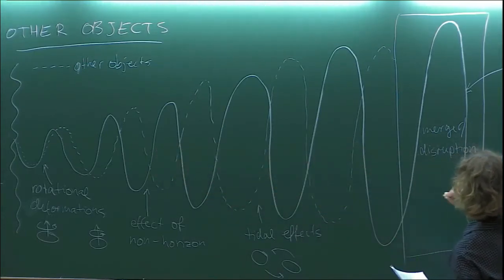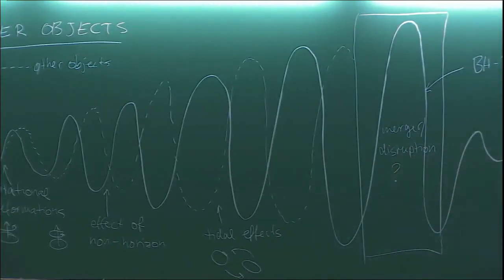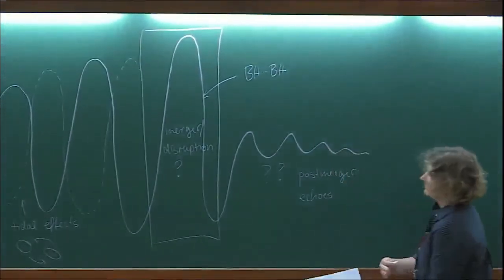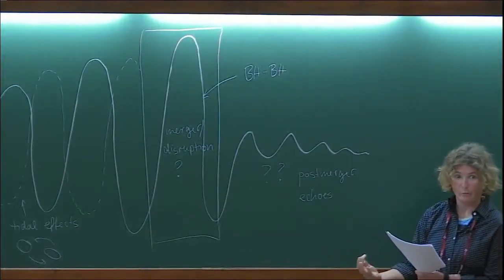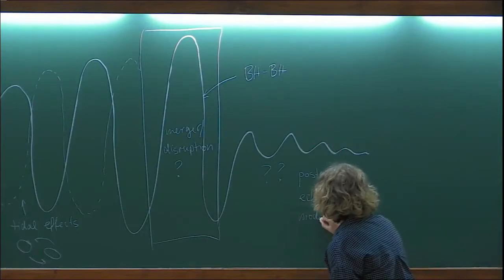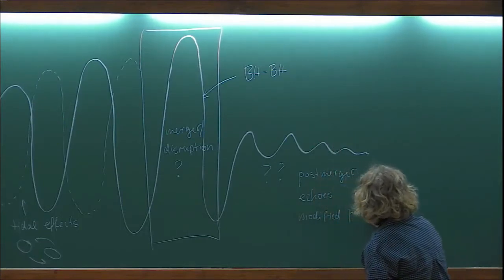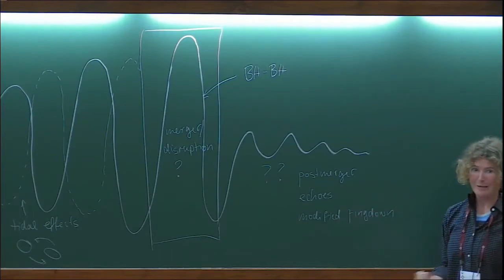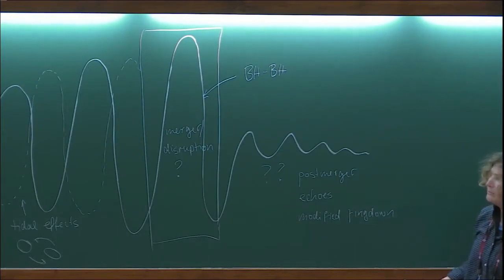The post-merger is full of question marks. For neutron stars, there could be a post-merger remnant, there could be echoes — where some radiation gets reflected back, for example if it's a wormhole — or a modified ringdown. These are the main ways that information about the nature of objects enters the waveform. In this course, we're going to focus on tidal effects out of all of these.